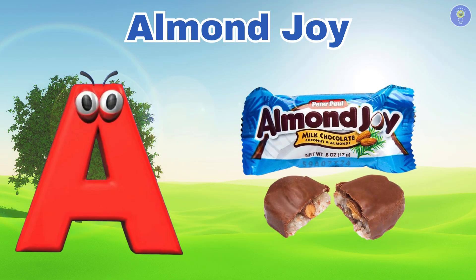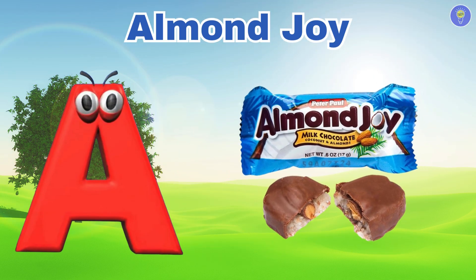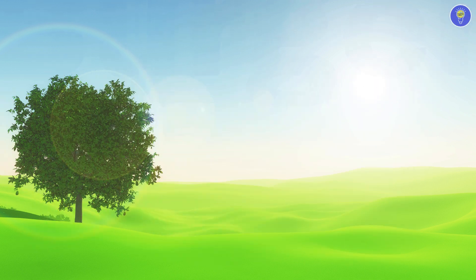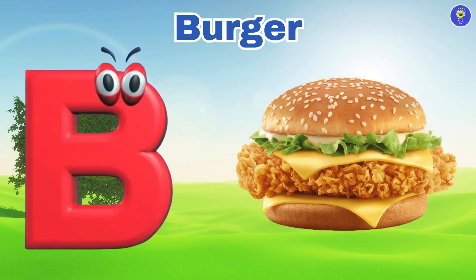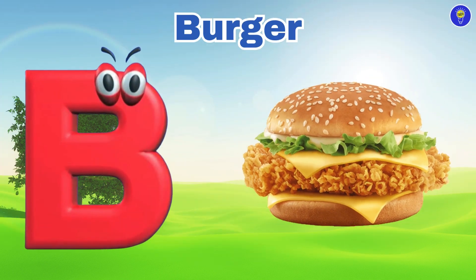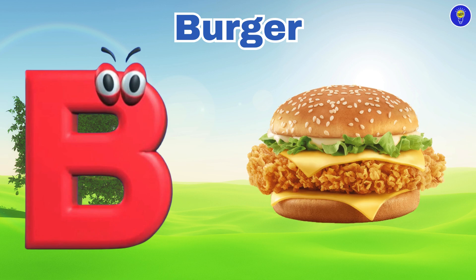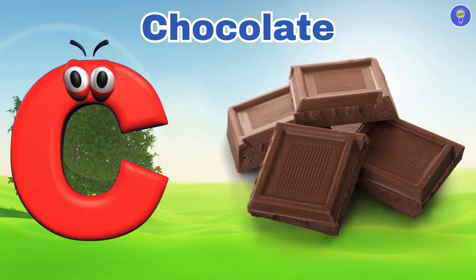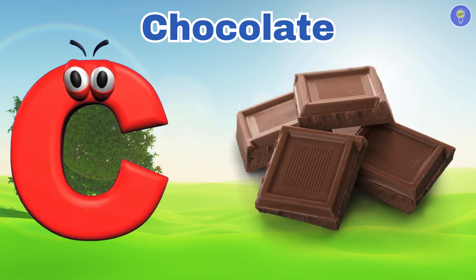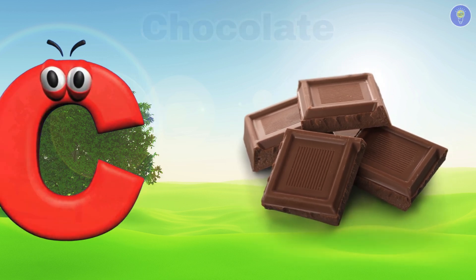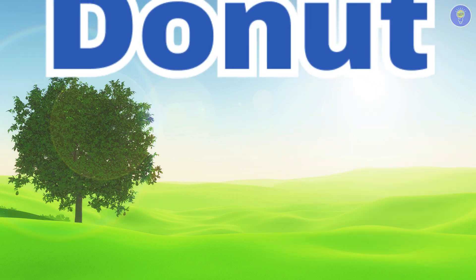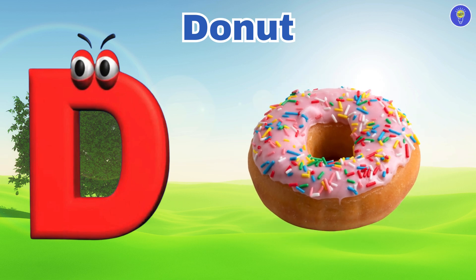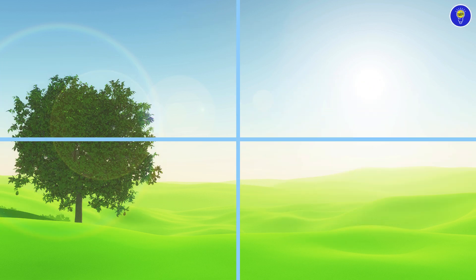A is for Almond Joy. A. Almond Joy. B is for Burger. B. Burger. C is for Chocolate. C. Chocolate. D is for Donuts. D. Donuts.